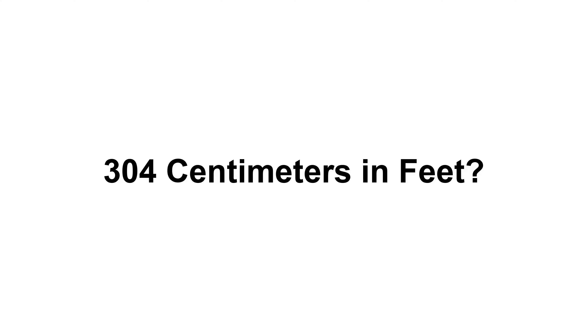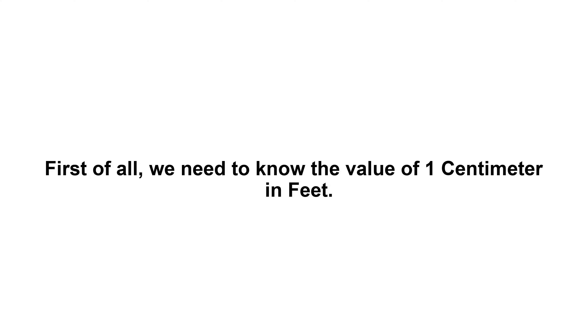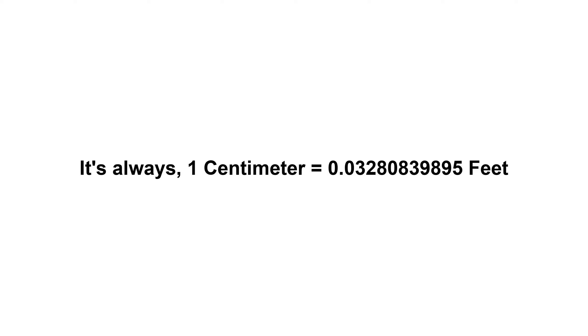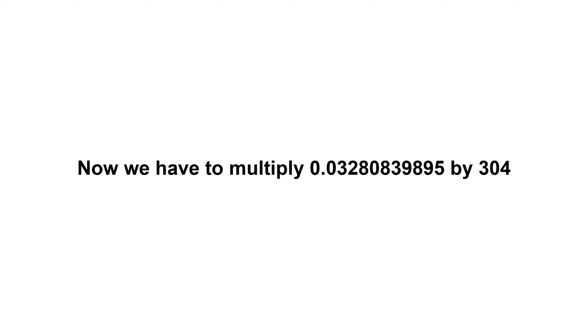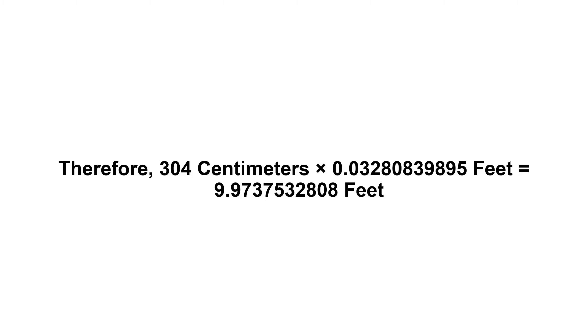304 centimeters in feet. First of all, we need to know the value of one centimeter in feet. One centimeter equals 0.03280839895 feet. Now we have to multiply 0.03280839895 by 304. Therefore, 304 centimeters times 0.03280839895 feet equals...